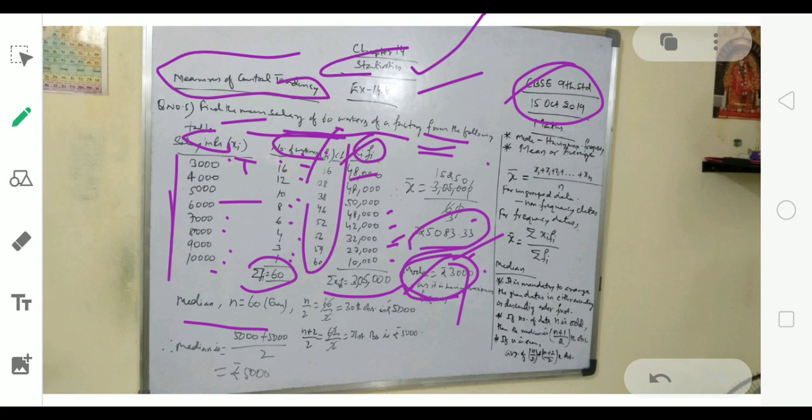When we find cumulative frequency, the first one is 16, then 16 plus 12 is 28, then 28 plus 10 is 38, 38 plus 8 is 46.